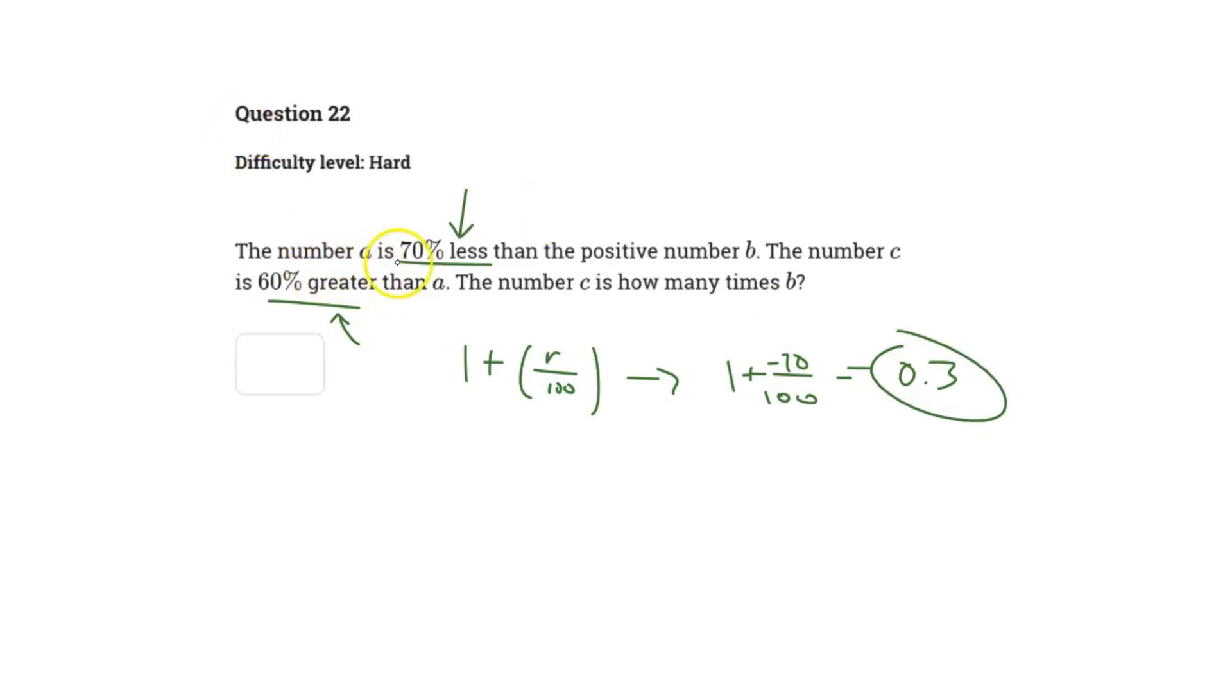We know that number A is 70% less than the positive number B. If we call B as x, we can call this 0.3x. So 0.3 times x is equivalent to the value of A.